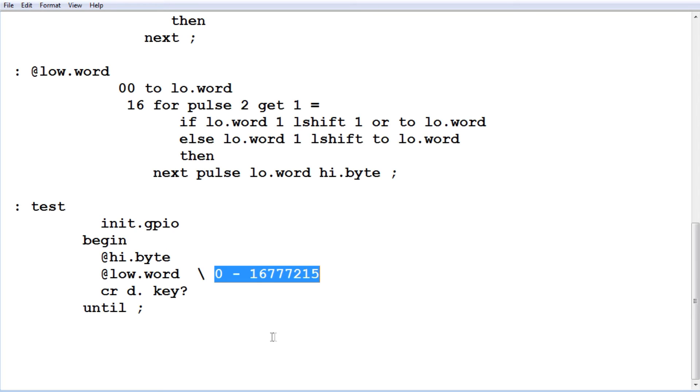So this is running continuously so you can get yourself some calibration weights, like a hundred gram weights, put it on your load cell and then read the value you get out. You'll get a 24-bit value, then you could calibrate your load cell.